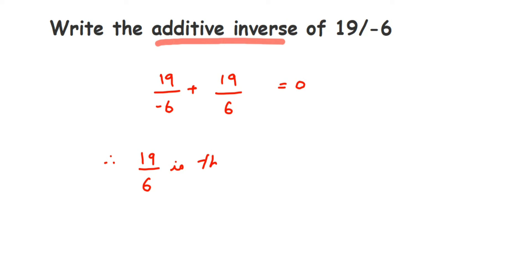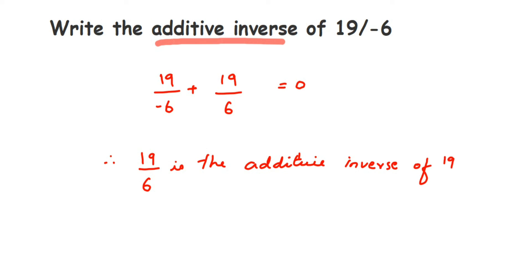Therefore, 19 by 6 is the additive inverse of 19 by minus 6. These types of questions are really important — though they are small, they can come for one mark, so don't lose that mark. Just remember: additive inverse is the same number but with the opposite sign. I hope this question is clear. If you have any other question or doubt, you can drop a comment. Thank you so much for watching.